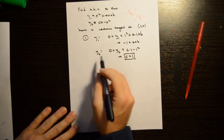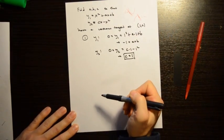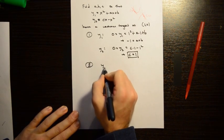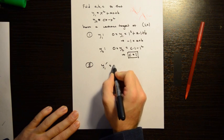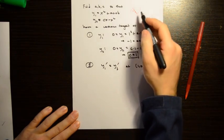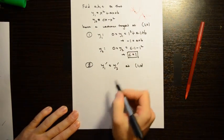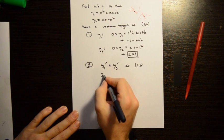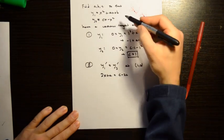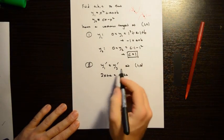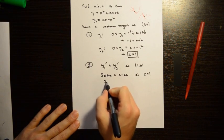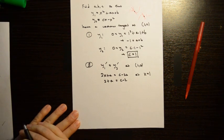We need another relationship, which comes from the slope of the tangent line being the same for both parabolas at (1, 0). We take the derivative of y1 and set it equal to the derivative of y2 at x = 1. So 2x + a equals c - 2x, and evaluating at x = 1 gives us 2 + a = c - 2.